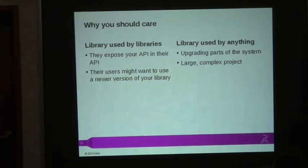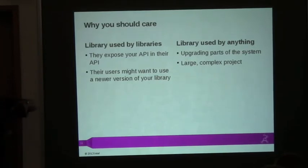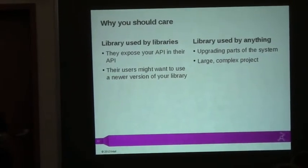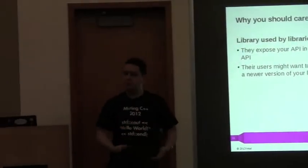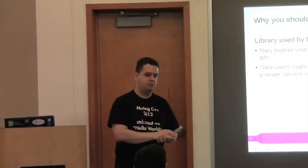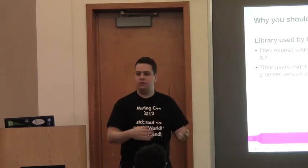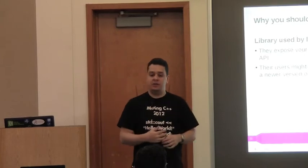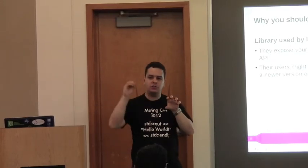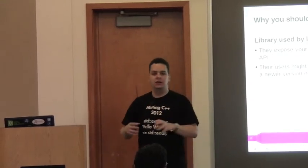Another scenario is two libraries as two components in one single process. Users upgrading part of the system is very common on Linux — you use the package manager and it upgrades for you. In a very large and complex project, someone might want to upgrade even the compiler for new features, which breaks binary compatibility. The question is how you could upgrade part of the system and still retain compatibility.